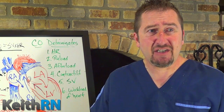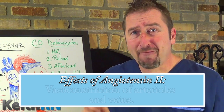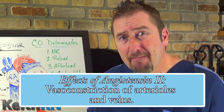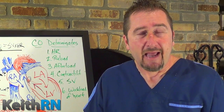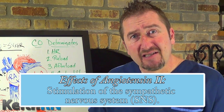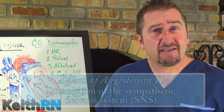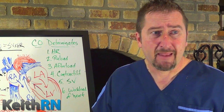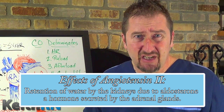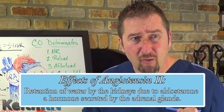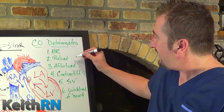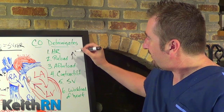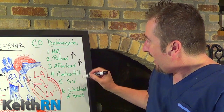The effects of angiotensin two cause profound vasoconstriction of the arterioles and veins, which is going to increase our afterload or systolic blood pressure. Angiotensin two also stimulates the sympathetic nervous system, increasing heart rate and blood pressure. Additionally, angiotensin two causes water retention by the kidneys due to secretion of aldosterone, a hormone secreted by the adrenal glands — and that is going to cause an increase in our preload.